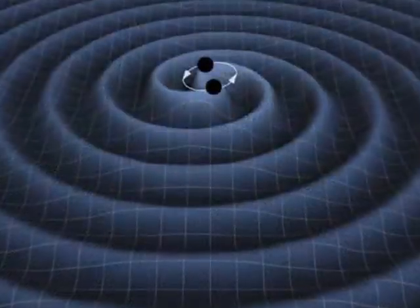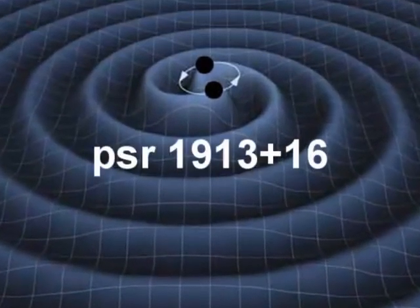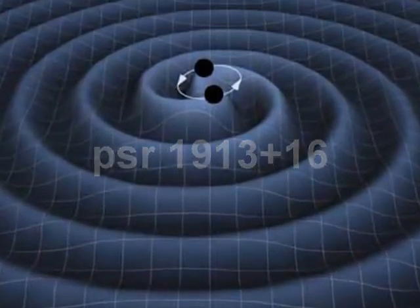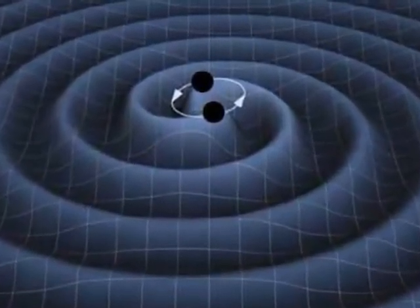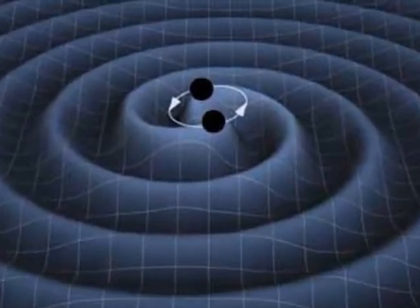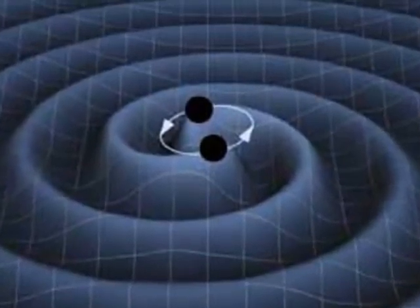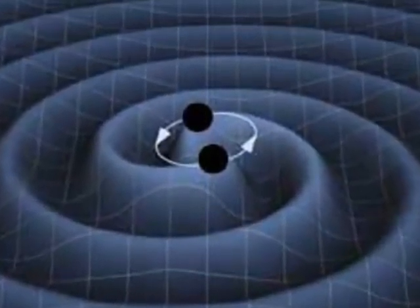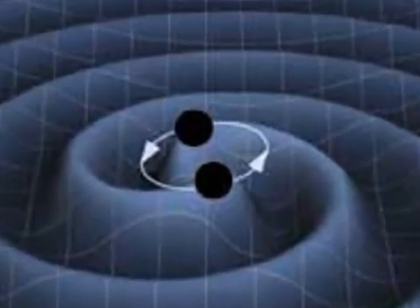By the 1960s, theorists had shown that if an object emits gravitational waves, its mass should decrease. Then, in the mid-1970s, American researchers observed a binary pulsar system named PSR 1913-16, thought to consist of two neutron stars closely and rapidly orbiting each other. Radio pulses from one of the stars showed that its orbital period decreased by 75 microseconds per year — in other words, the stars are spiraling in towards each other, by just the amount predicted if the system were losing energy by radiating gravity waves.